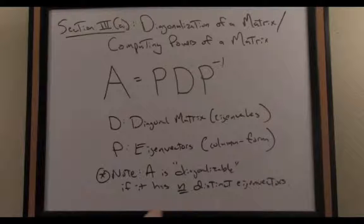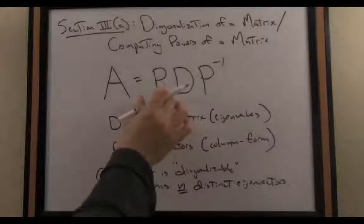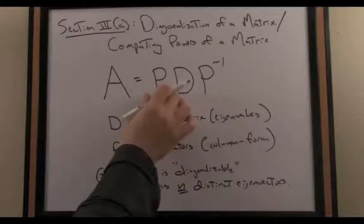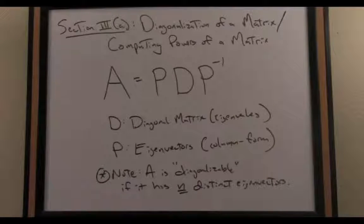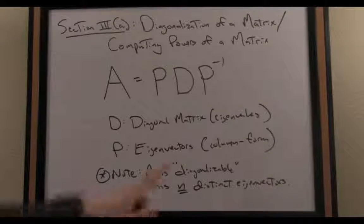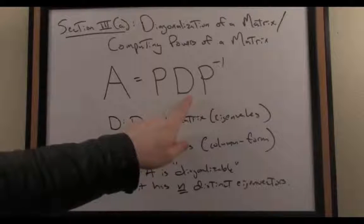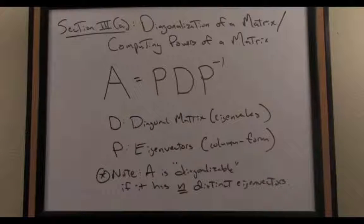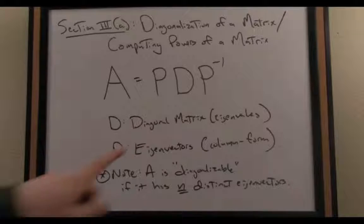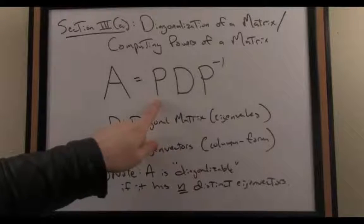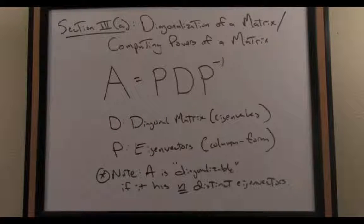if we have n distinct eigenvectors, I have a sufficient number to fill in for P. And by the way, that matrix will be invertible as a theorem kind of left over from linear algebra guarantees the existence of P inverse as well.